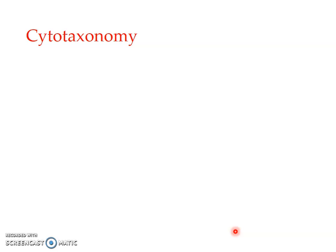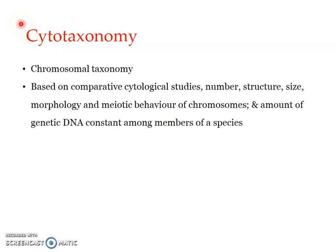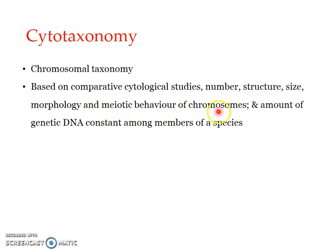The next type is cytotaxonomy. 'Cyto' means cell, and here we deal with chromosomes, so it is otherwise referred to as chromosomal taxonomy. Classification is based on comparative cytological studies, where the number, structure, size, morphology, and meiotic behavior of chromosomes are studied. Those having similar chromosome structure, number, and size are considered more closely related, and this also helps in determining phylogenetic relationships.